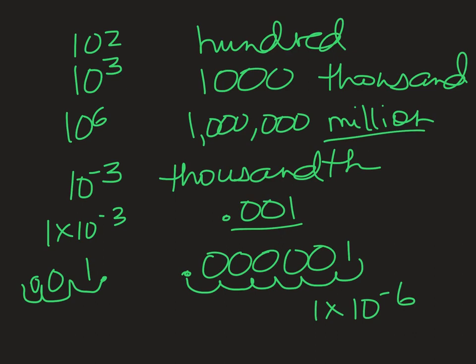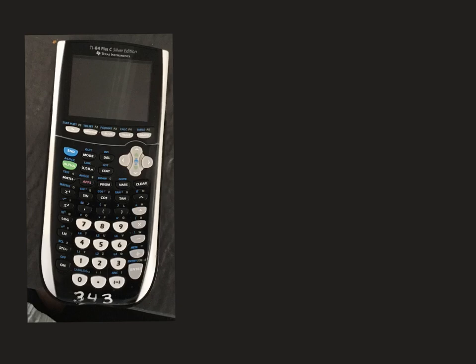Now we're going to go over entering scientific notation into our calculator. Here's your standard TI calculator. Let's say we wanted to put 1.2 times 10 to the 5th into our calculator. You would normally go 1.2 times 10, then hit the caret button, 5, enter. Okay, that works — I know you've been doing it, and it works.